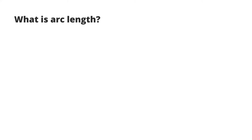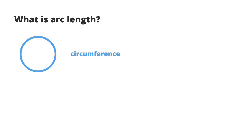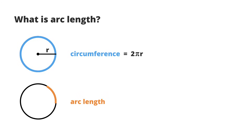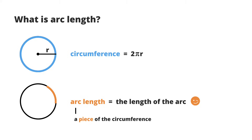We should first talk about what we mean when we say arc length. Here we have a circle, and you all know what a circumference is, right? It's the length of this outside perimeter of the circle, and you can calculate the full perimeter by using the formula 2πr, where r is the radius. An arc is defined as any piece of the circumference, so arc length is just how long that piece is.